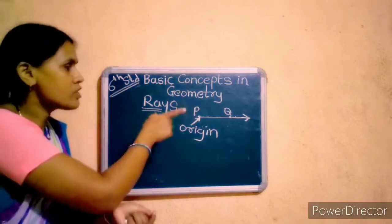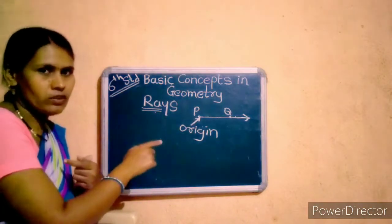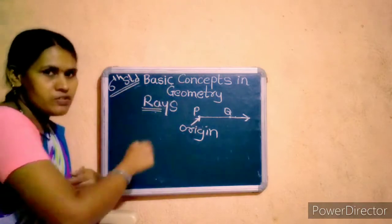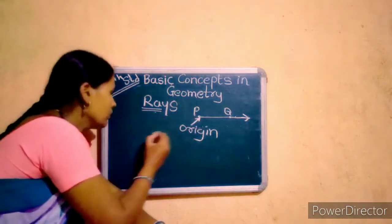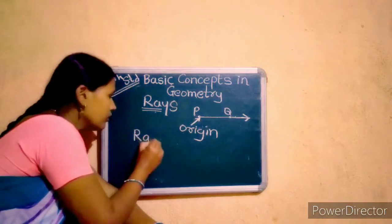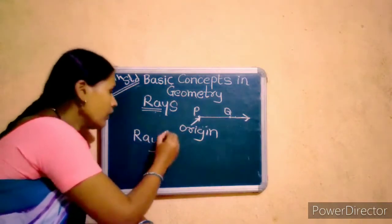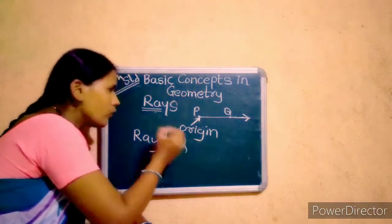We call this figure, with the point and arrowhead, we call it ray PQ.